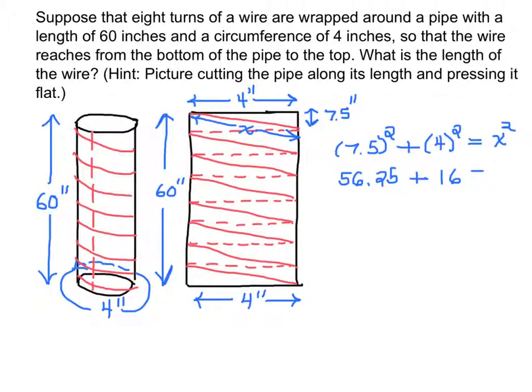And this is equal to x squared. And if I add 56.25 to 16, I get 72.25. And that is what x squared is equal to. So now if I take the square root of both sides, I get the square root of 72.25 is equal to the square root of x, which is x.